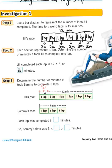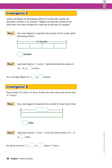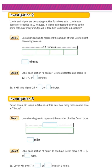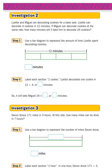On to the next page, we're going to do Investigation 2. In Investigation 2, they give us a little less information, so we have to do a little bit more. Here's what it says: Lizette and Miguel are decorating cookies for a bake sale. Lizette can decorate four cookies in 12 minutes. If Miguel can decorate cookies at the same rate, how many minutes will it take him to decorate 24 cookies? This is like that last problem with the go-karts, except now we're doing cookies in minutes.